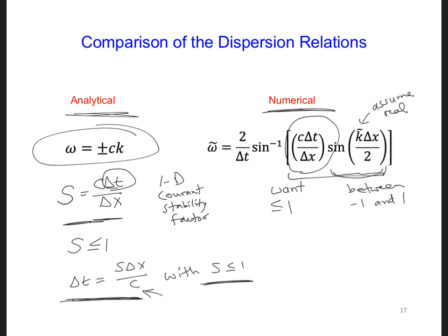Since you have a working one-dimensional code by now, let's first try a value higher than this current limit and see what happens. Introduce a new variable into your program, this S, and set it equal to 1.01, which is just barely above the current limit. Then set delta t equal to S times delta x over c. What happens in your simulation?